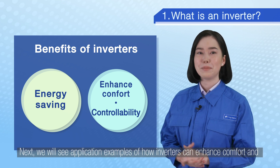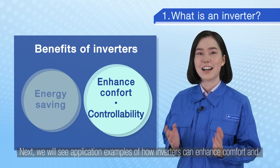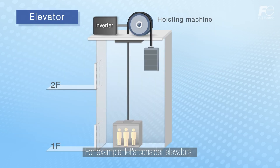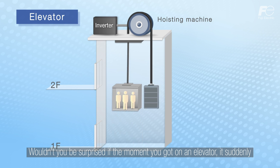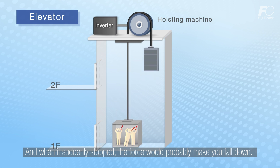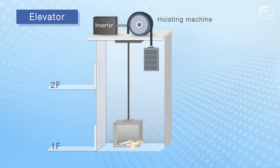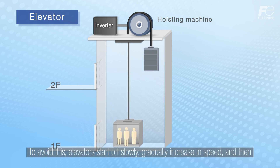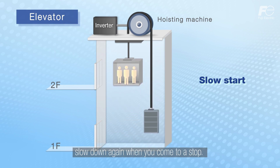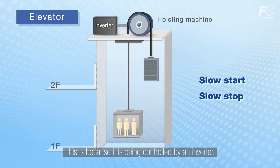Next we will see application examples of how inverters can enhance comfort and controllability. For example, let's consider elevators. Wouldn't you be surprised if the moment you got on an elevator it suddenly started going up at high speed and then suddenly stopped — the force would probably make you fall down. To avoid this, elevators start off slowly, gradually increase in speed, and then slow down again when coming to a stop. This is because it is being controlled by an inverter.